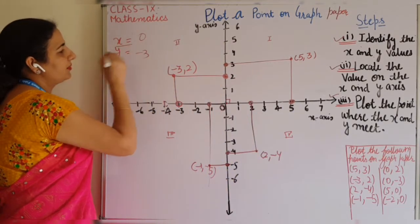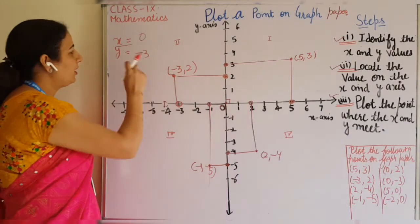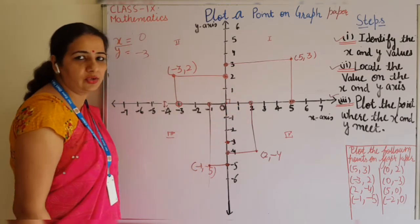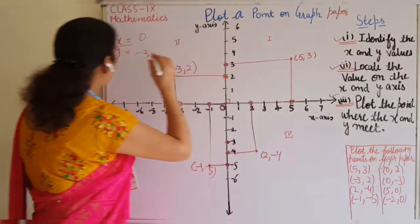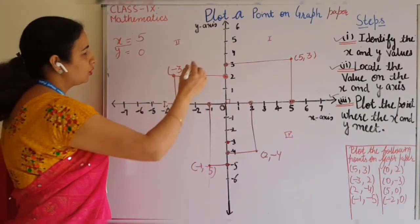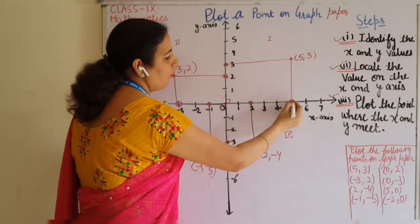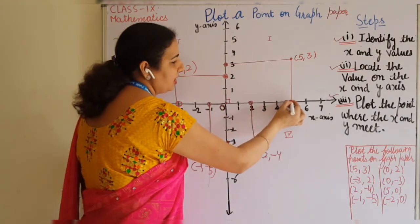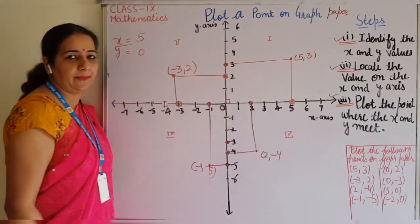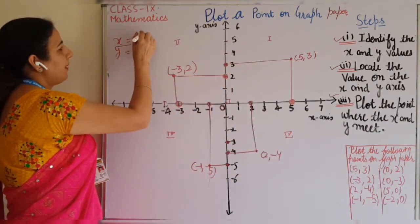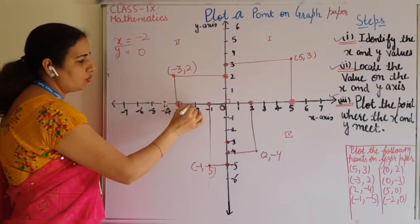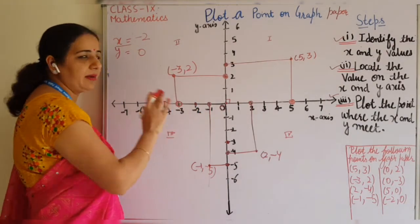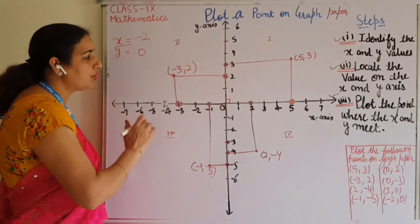Similarly, (0, -3): x is 0, y is minus 3. No need to plot on the x-axis — y minus 3 is the point, so it lies on the y-axis only, not in any quadrant. For (5, 0): x is 5, y is 0 — since y is 0, no need to extend; the point lies on the x-axis. Finally, (-2, 0): x is minus 2, y is 0 — it will not go into any quadrant; it lies on the x-axis.